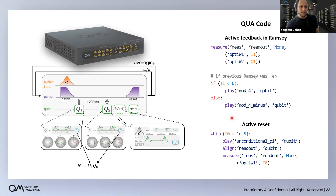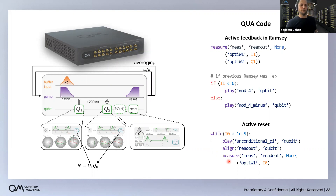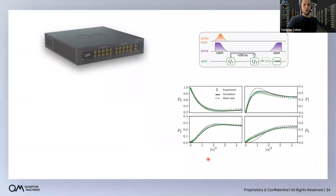For active reset, something similar is used: the qubit is measured, and only if it's in the ground state does the sequence continue. If it's in the excited state, a pi pulse is played to it and then it's measured again. This is a repeat-until-success protocol where you keep trying to ground the qubit until you actually succeed — not just branching, but really repeating until success.